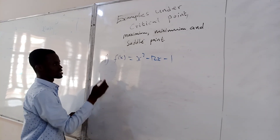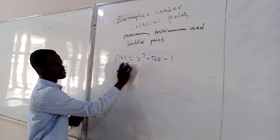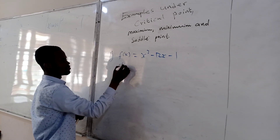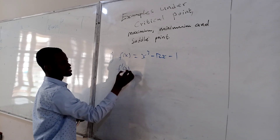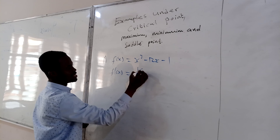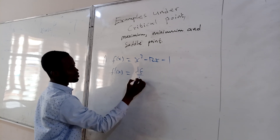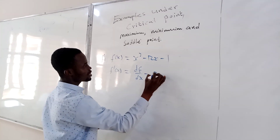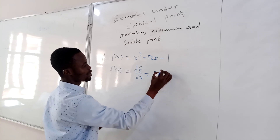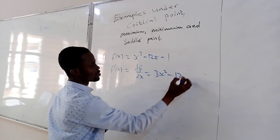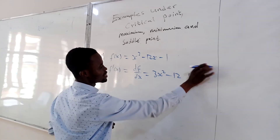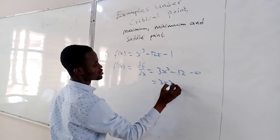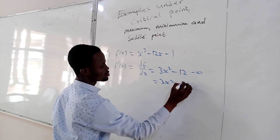To find the critical point, you always have to differentiate the equation. So f'(x), which is the same as df/dx, is equal to 3x² minus 12 minus 0, which is the same as 3x² minus 12.